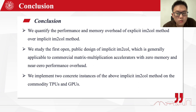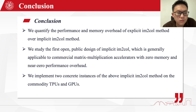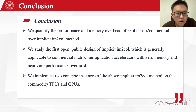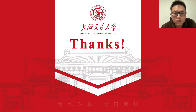In conclusion, we quantified the performance and memory overhead of the explicit image-to-column method over the implicit image-to-column method. We present the first open public design of implicit image-to-column that is generally applicable to commercial matrix multiplication accelerators with zero memory overhead and near-zero performance overhead. We implemented two concrete instances of our implicit image-to-column method on both TPUs and GPUs. Thank you.